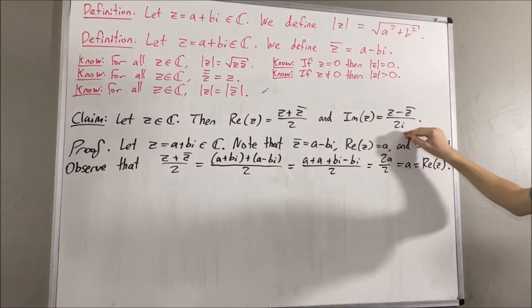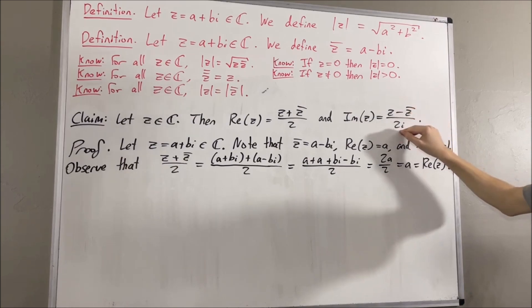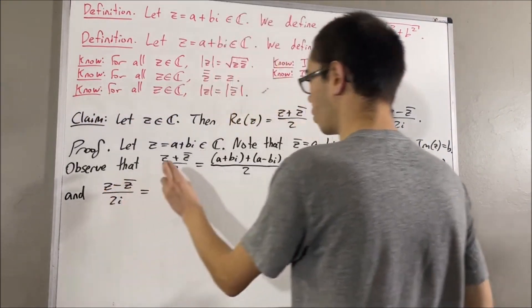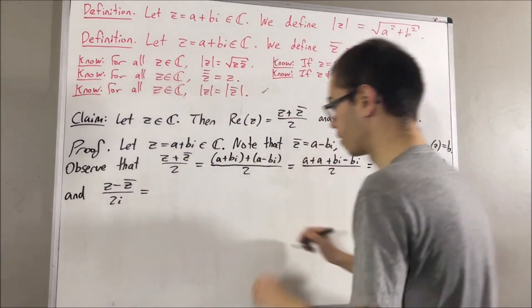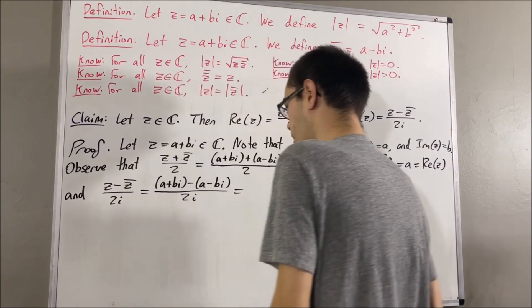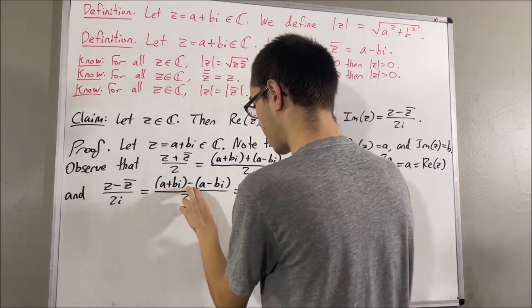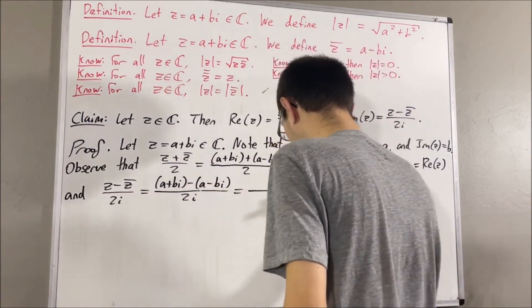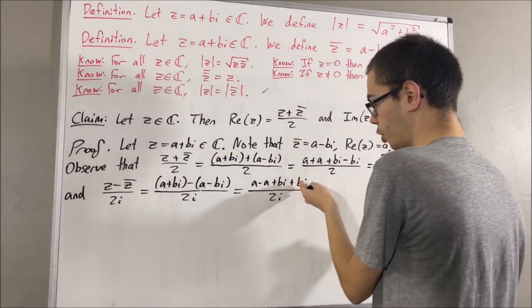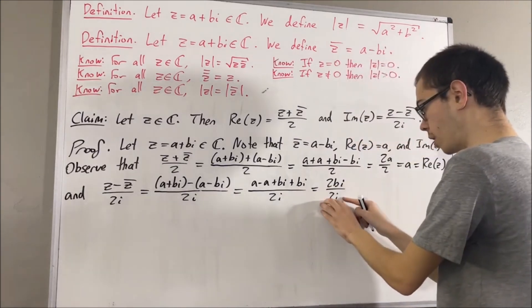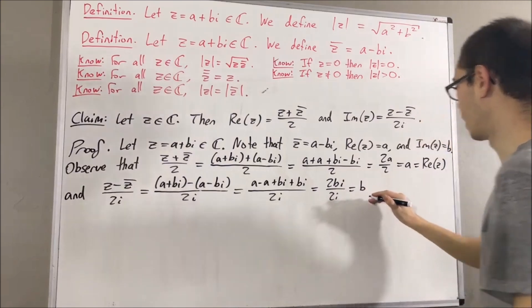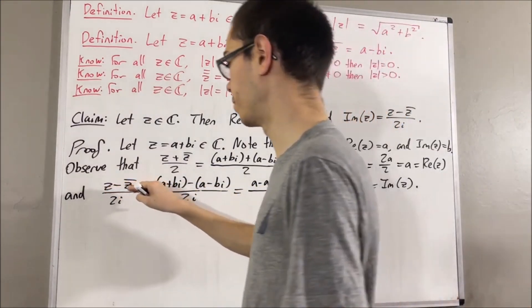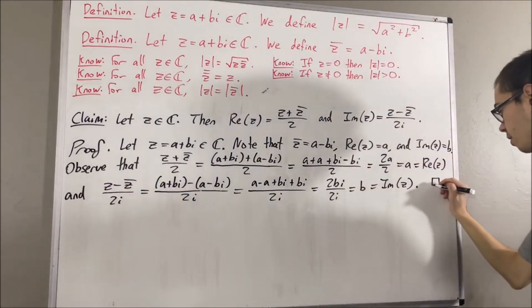Now we prove that z minus z bar over 2i simplifies to b. Again, we substitute z for a plus bi and z bar for a minus bi. Grouping the real and imaginary parts: we have a minus a, plus bi plus bi (the two negatives join to make a positive). This simplifies to 2bi. So 2bi over 2i, and 2i cancels out, leaving just b. And b equals the imaginary part of z. So we have shown that the imaginary part of z equals z minus z bar over 2i, completing the proof.